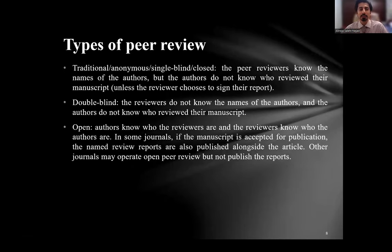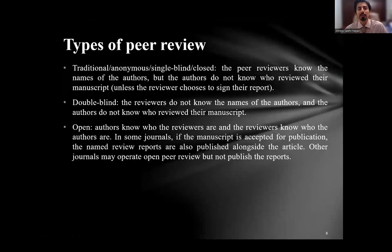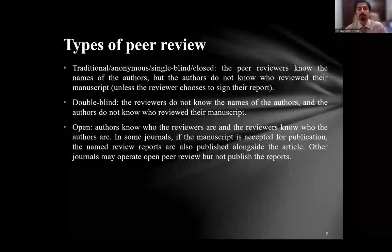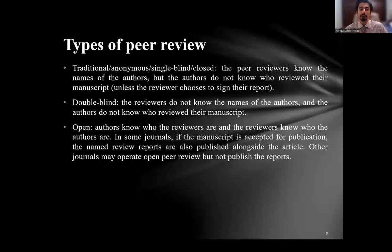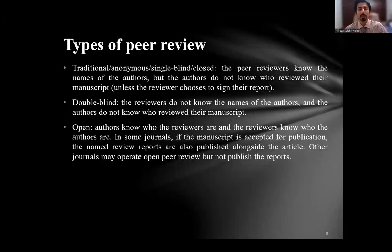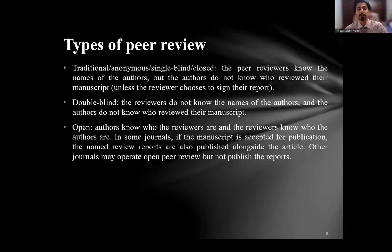The three most common types of peer review are: single-blind, in which peer reviewers know the names of the authors but the authors do not know the names of the reviewers; double-blind, where neither reviewers nor authors know each other's identities; and open peer review, where authors know who the reviewers are and the reviewers also know who the authors are. In some journals, if the manuscript is accepted for publication, the review reports are also published alongside the article.